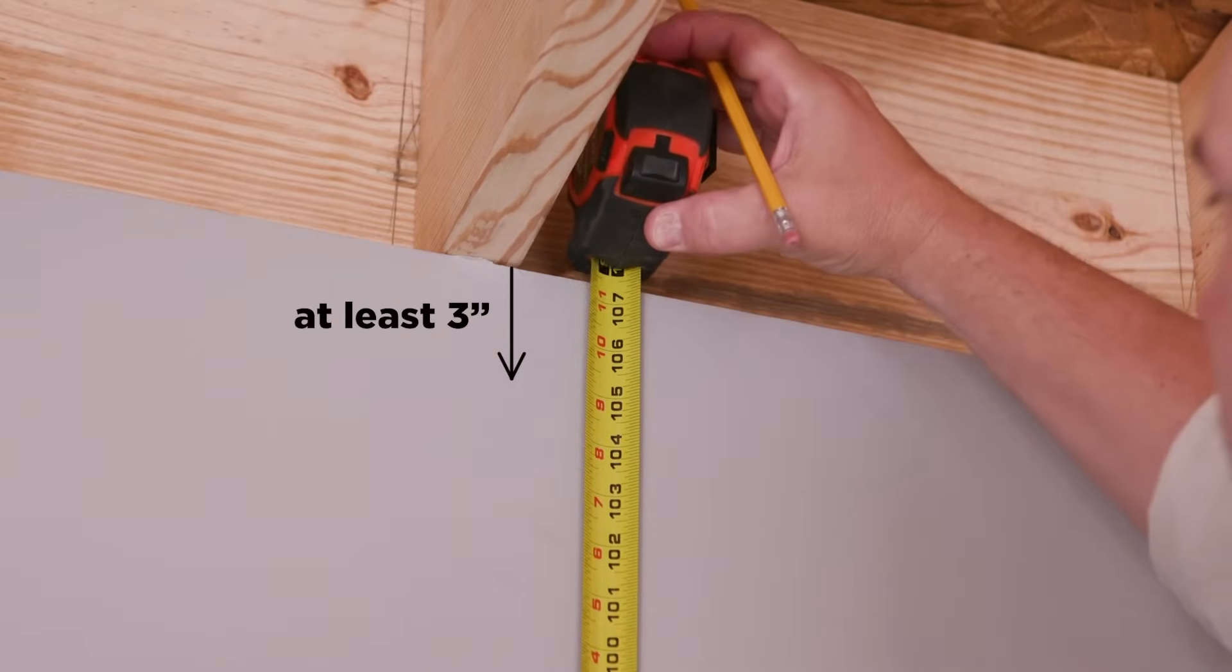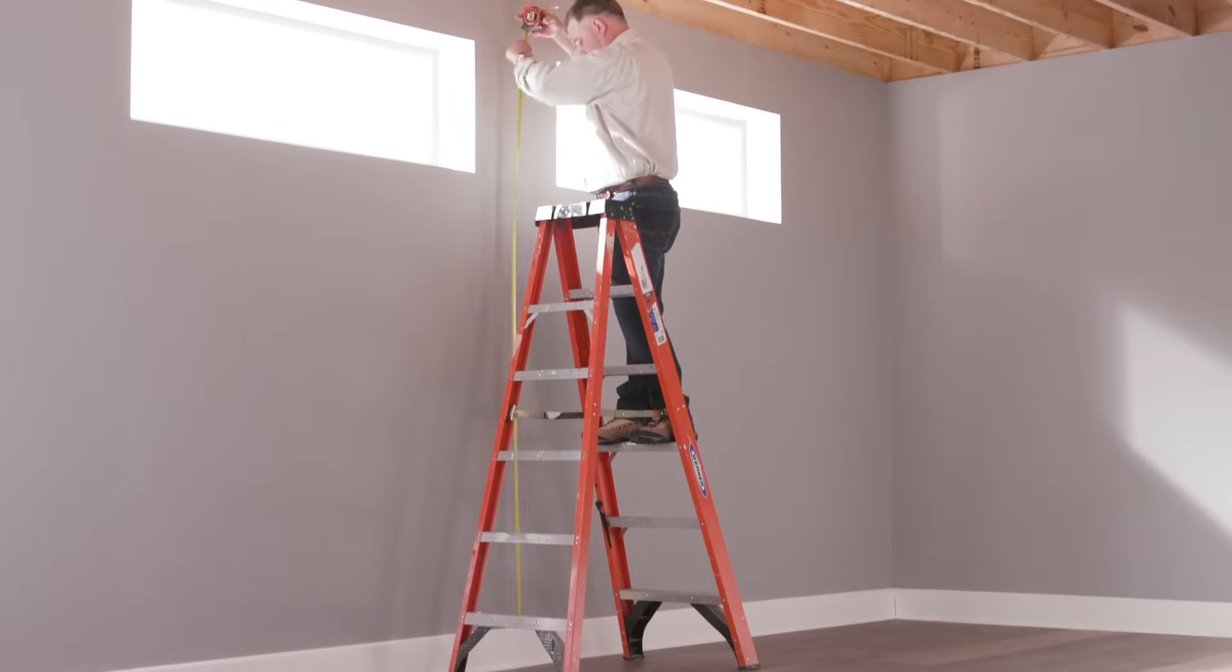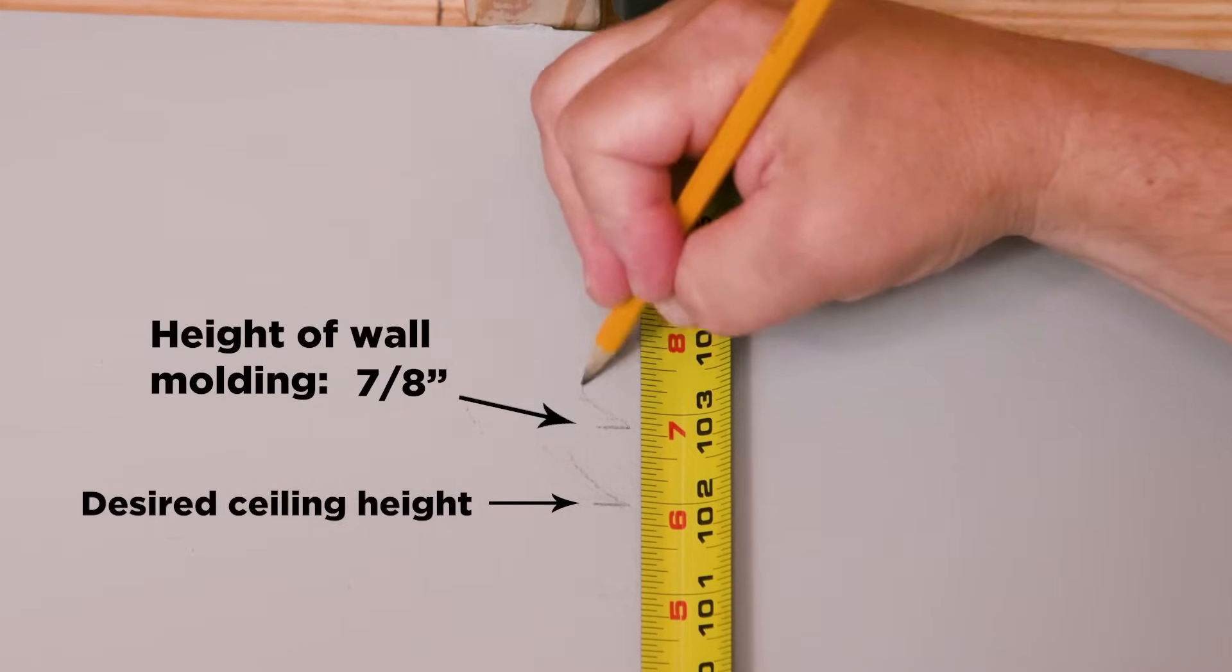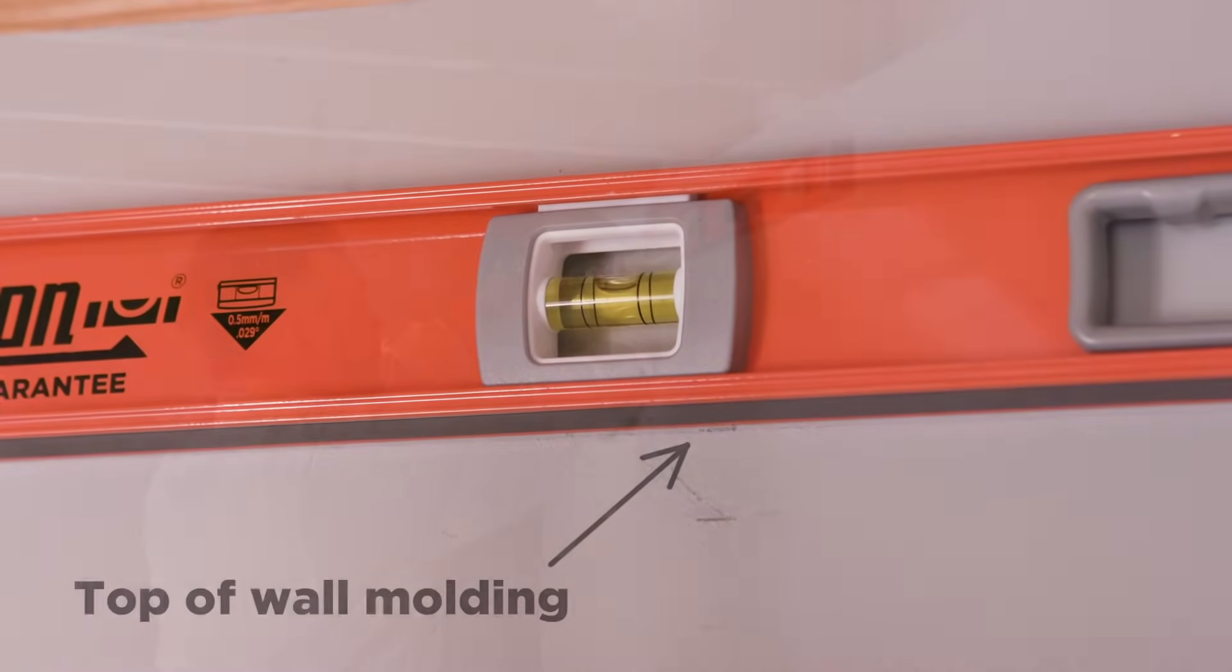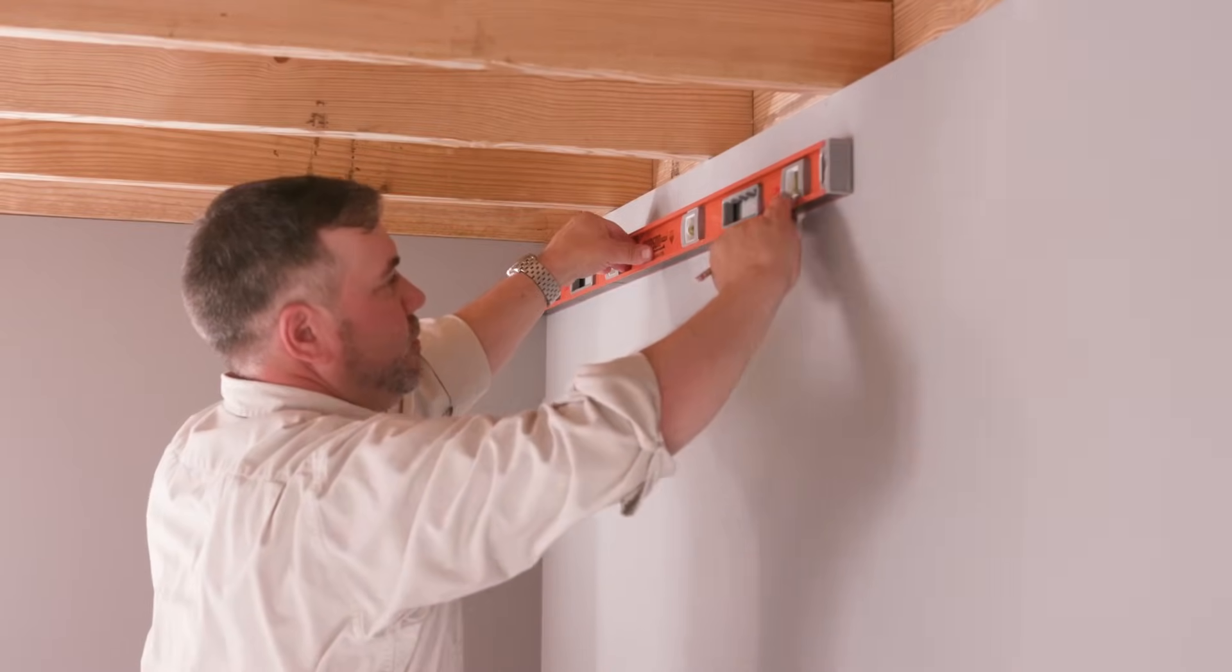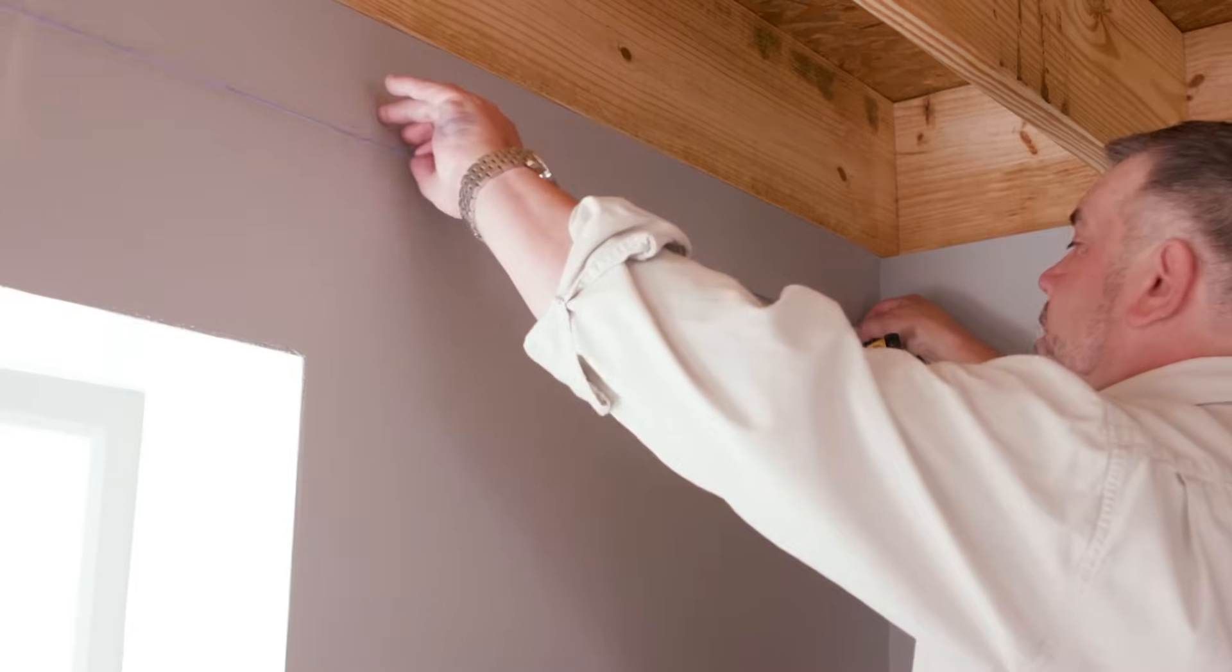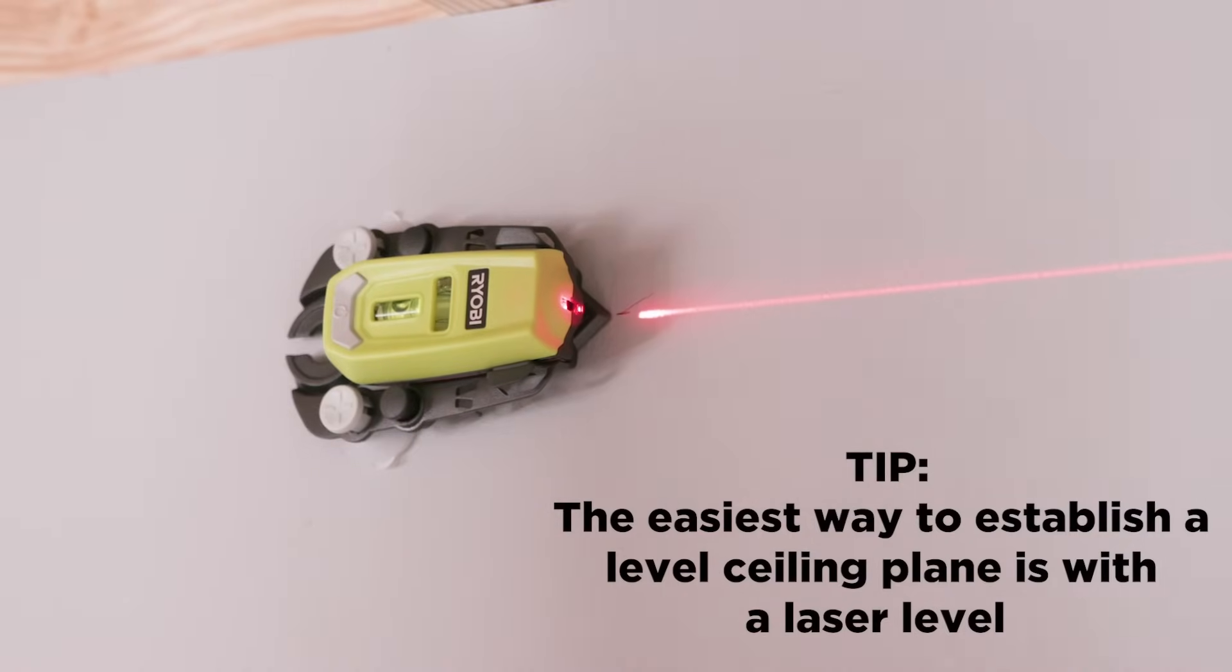Installing Wall Moulding: The first step to installing your grid is establishing your ceiling height. For a typical installation, leave at least 3 inches below joists. This will allow you to get the ceiling panels in and out of the grid more easily. Identify your desired ceiling height. Then, add the height of the wall molding above the desired ceiling height. Mark a level line where the top of the wall molding will be on 3 walls. This will keep the marks from being visible after your ceiling is installed. Use a string line to mark the 4th wall. Doing this correctly will help ensure that your ceiling plane is level and flat. Tip: The easiest way to establish a level ceiling plane is with a laser level.